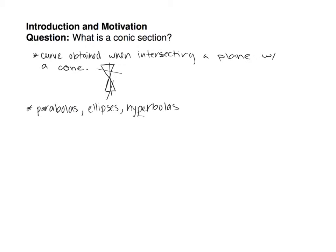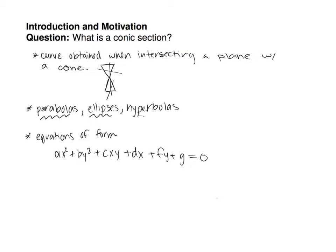Some familiar curves that are examples of the types of curves you get when you intersect this cone with a plane are parabolas, ellipses, and hyperbolas. All of these geometric objects have equations of the form ax² + by² + cxy + dx + fy + g = 0, where the only requirement is that a and b cannot both equal zero.